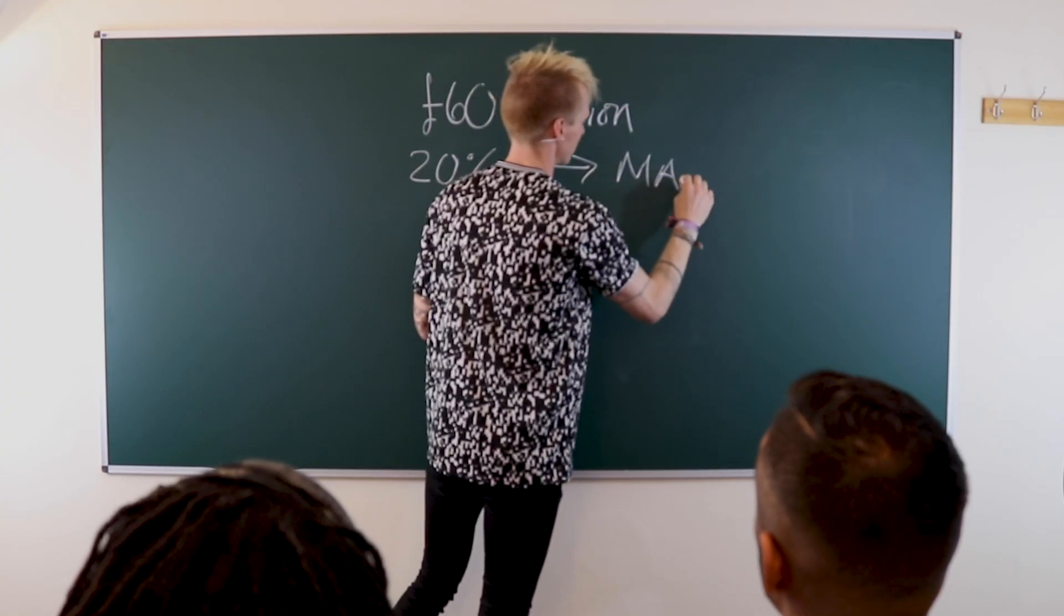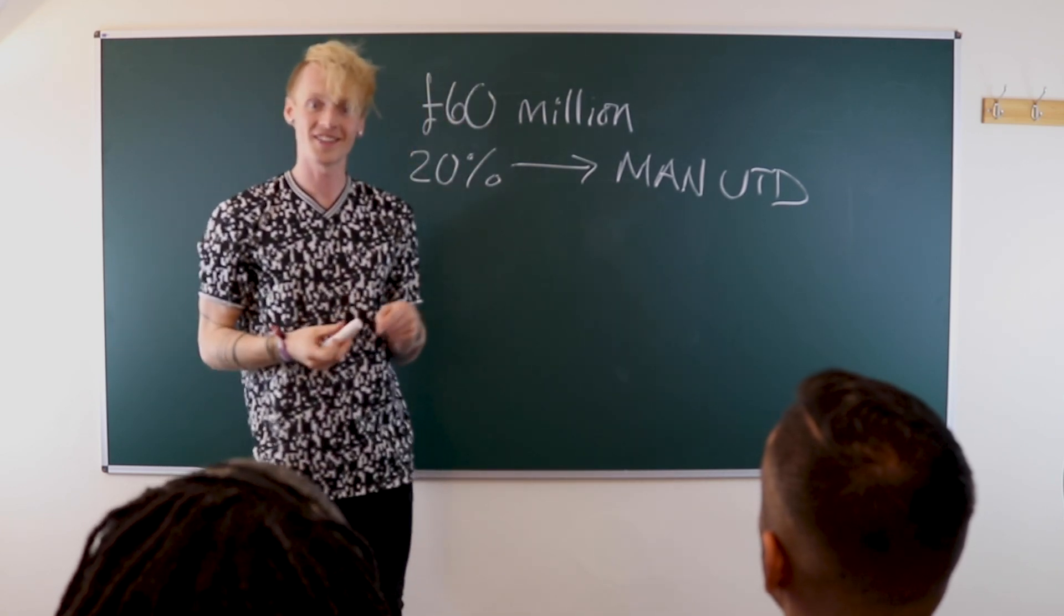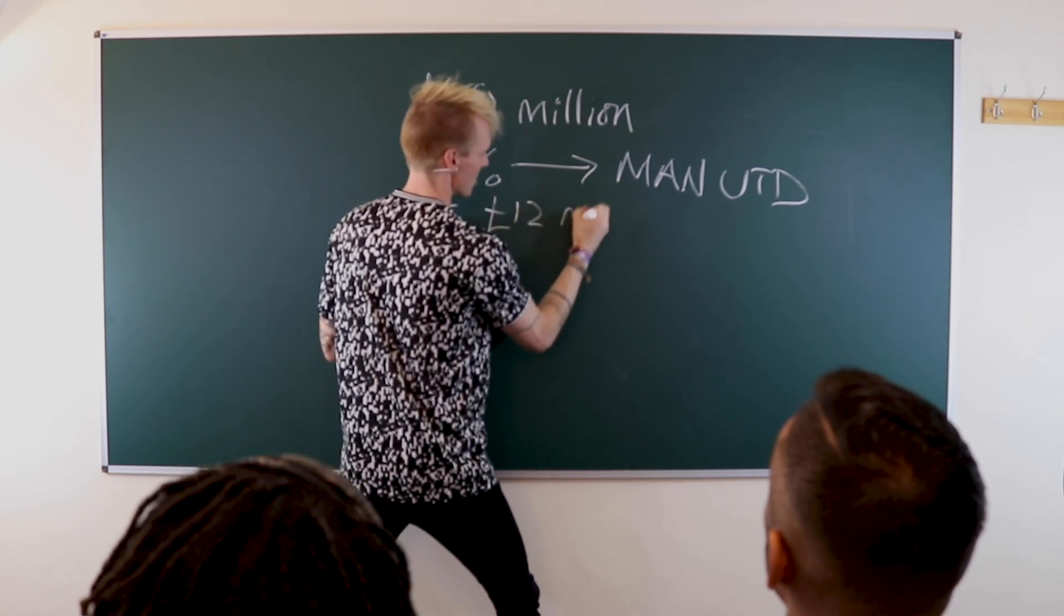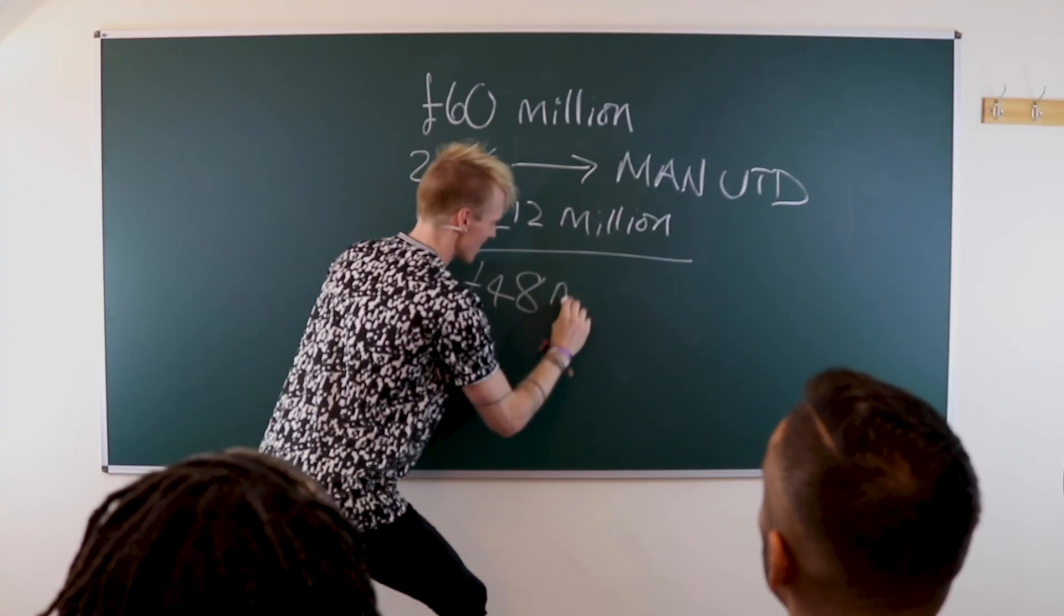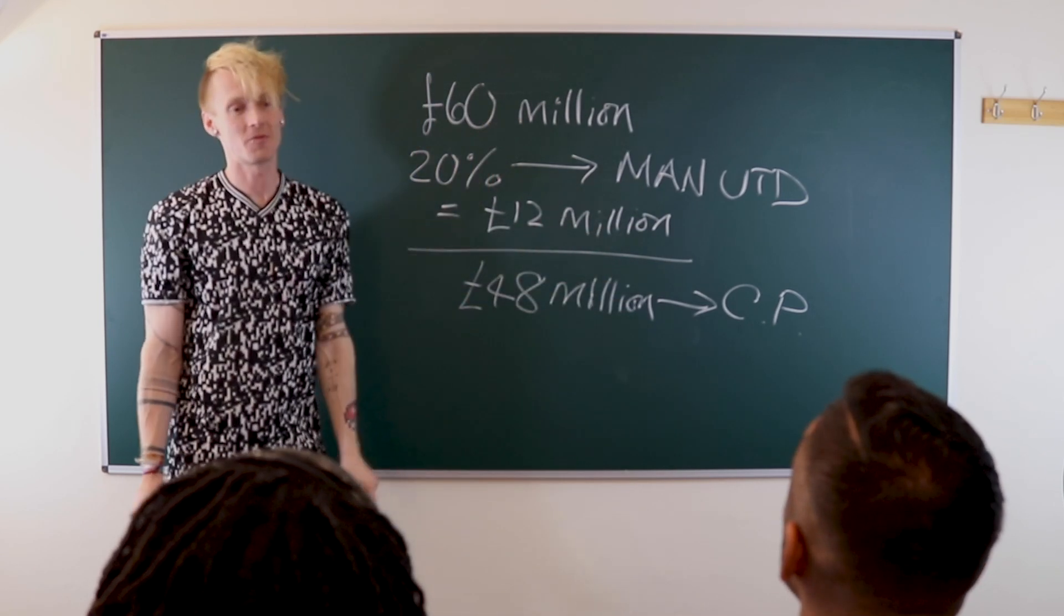So 20% goes to Man United. So 12 million. So 12 million is 20% of the 60. So this is equal to 12 million. So how much did Crystal Palace get, Bobby? So 60 million deducting the 12 million to Man United, that's 48 million pounds. So 48, which, again, it's a lot of money. But it's not quite 60 million, is it? So 48 million pounds would go to Crystal Palace. And that's not the 60 million they wanted.